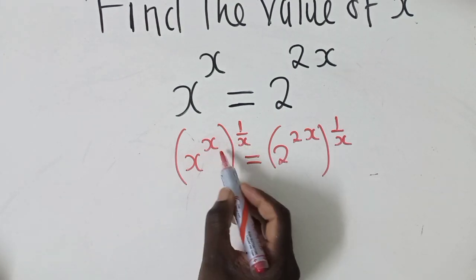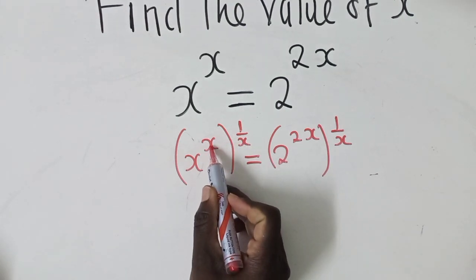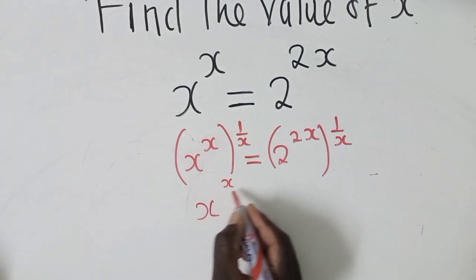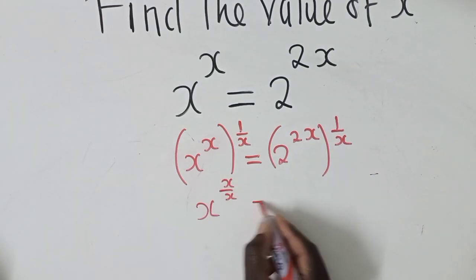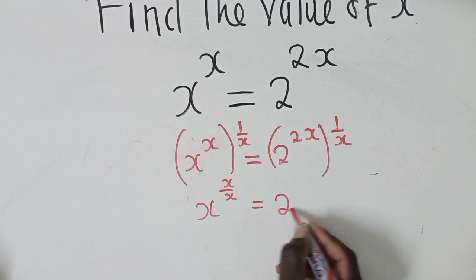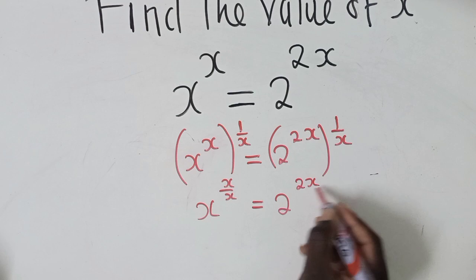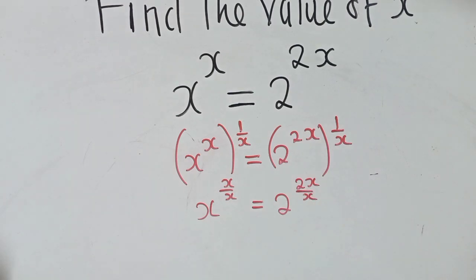we now multiply using the laws of indices. You can multiply this power by this. So we shall have x power x over x, which is equal to 2 here power 2x over x.